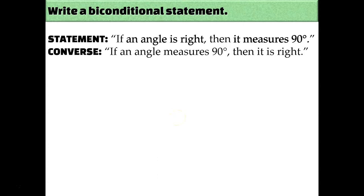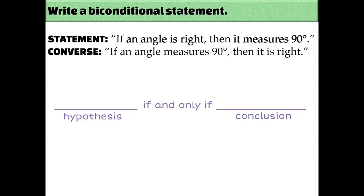Since the converse of our true conditional statement is also true, we need to write a biconditional statement. Biconditional statements take this form: hypothesis, if and only if, conclusion — using the hypothesis and conclusion of the original conditional statement, not the converse's. Remember, the converse is the reverse of the conditional statement, so make sure you're using the hypothesis and conclusion of the conditional statement, not the converse.